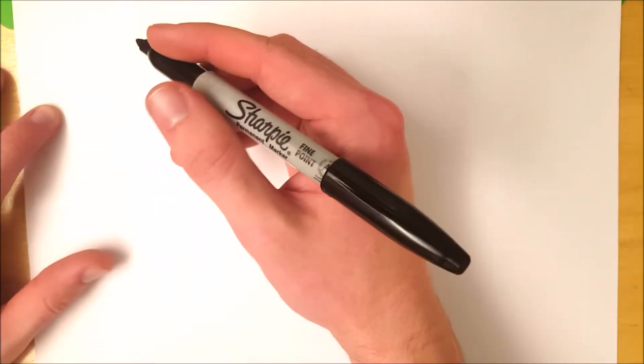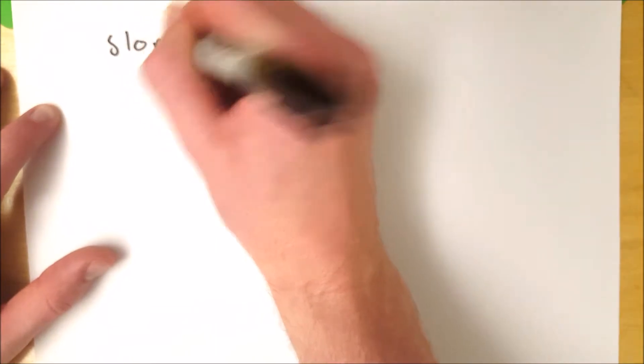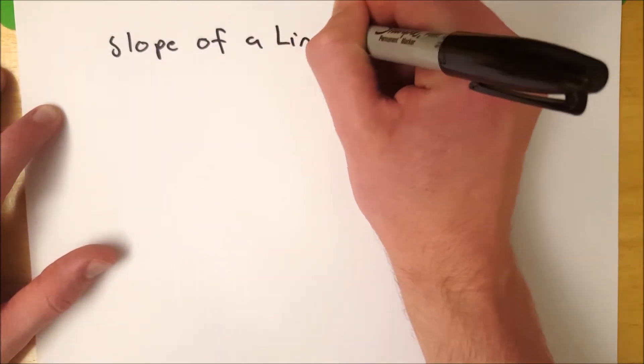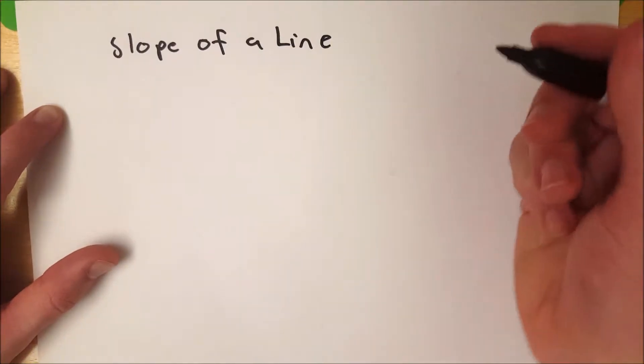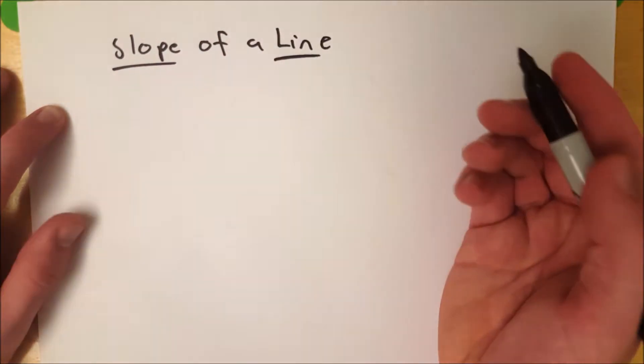Hello everyone, welcome to Wrath of Math. I'm your host Sean Ian. In today's video we're going to talk about how to find the slope of a line, a linear function, given two points. You're going to need two points, and with two points you can find the slope of any line.